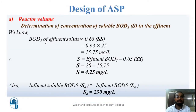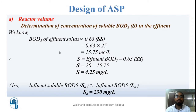We will first calculate the reactor volume. For that, we need to determine the concentration of soluble BOD in the effluent. The BOD5 of effluent solids is 0.63 × SS = 0.63 × 25 = 15.75 mg/L. Then soluble BOD in effluent = effluent BOD5 − 0.63×SS = 20 − 15.75 = 4.25 mg/L.